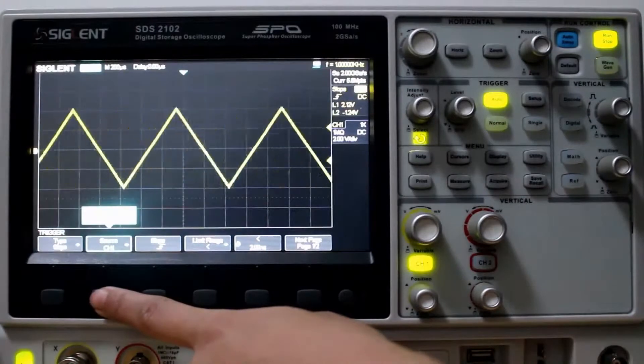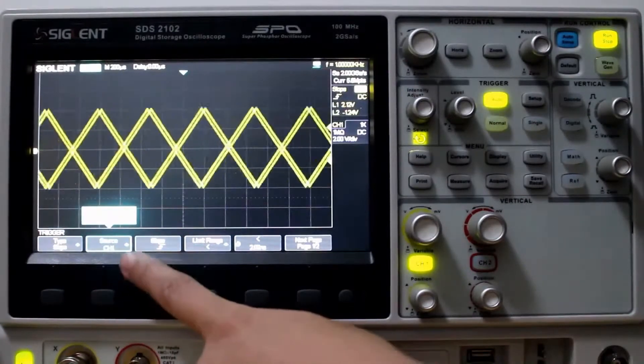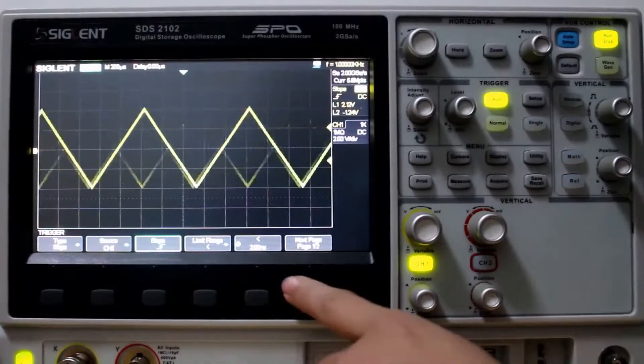Now we're looking at the slope trigger type. Channel 1, rising.